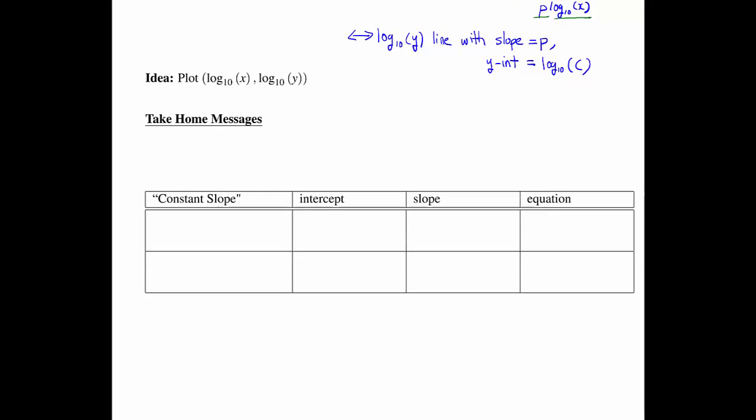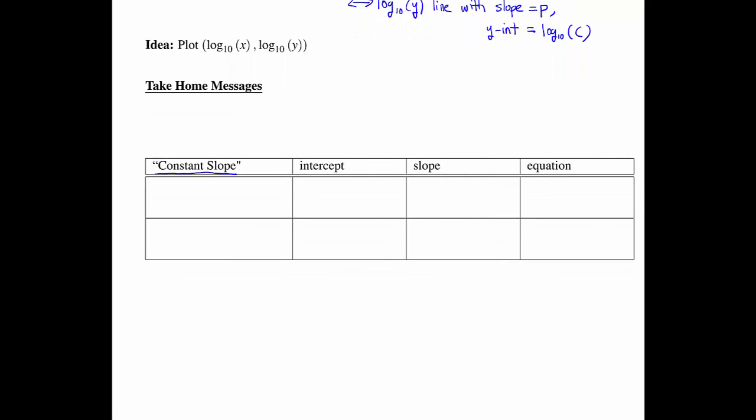Our take-home message from this lecture is what we do is we look for a constant slope relationship. If that occurs between the original independent variable x and log y, the log of the observations, then the intercept is log c and the slope is log b, and the relationship we have is exponential, y equals c times b to the x. If the constant slope relationship is between log-log in the log-log scale, then the intercept again is log c, but now the slope is p. And the equation, the relationship equation, is y equals c times x to the p.